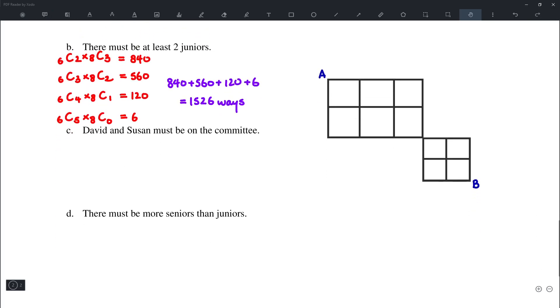Part C. So this is a little bit different. If David and Susan must be on the committee, then there are only 12 spots left. So this will be simply 12C3 for the remaining three spots, and that will be 220 ways.